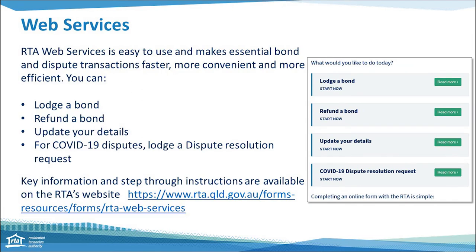The paper form will remain available for customers who are unable to use web services. However, the RTA web services is easy to use and makes essential bond and dispute transactions faster, more convenient, and more efficient. Through web services you can lodge a rental bond, refund a rental bond, update your details, and for disputes lodge a dispute resolution request. The website also has step-by-step instructions and helpful hints, and can result in faster day-to-day processing.